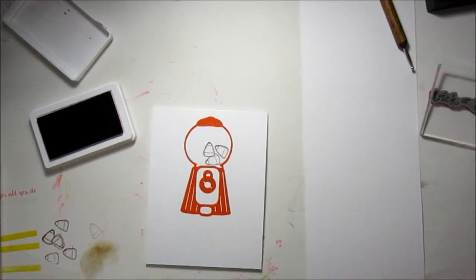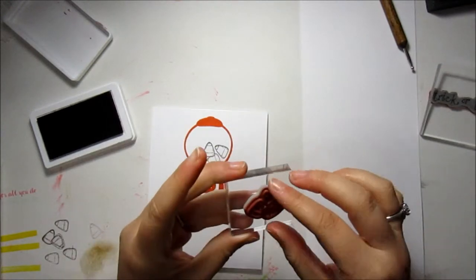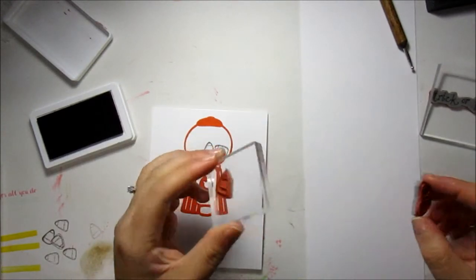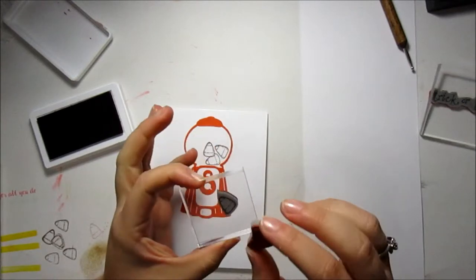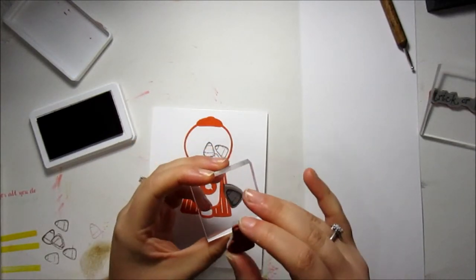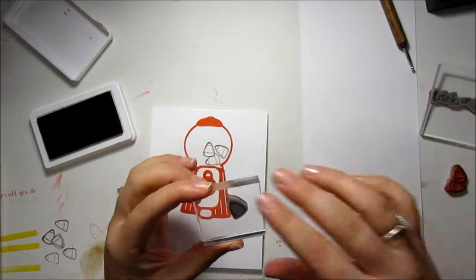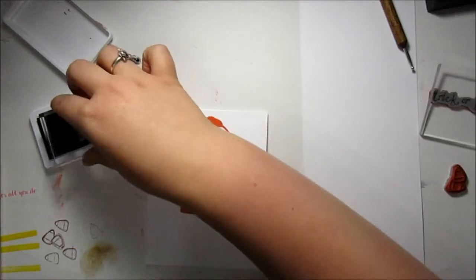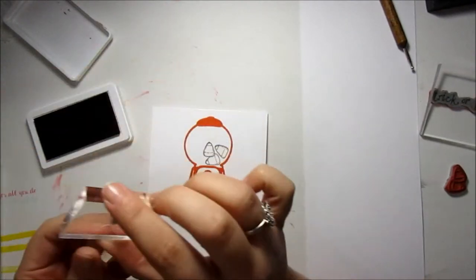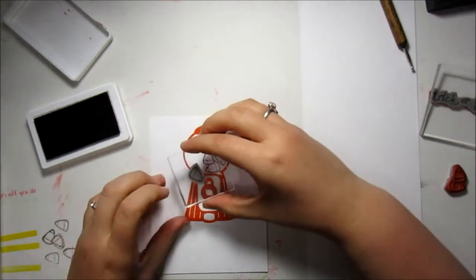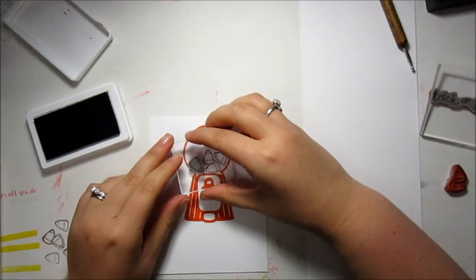I'm going to stamp it once with all three of them, and then I cut my candy corns apart because I just wanted to stamp a few individual ones. So I'm going to keep the individual one on my block for now and I'm just going to start filling in some of the areas.